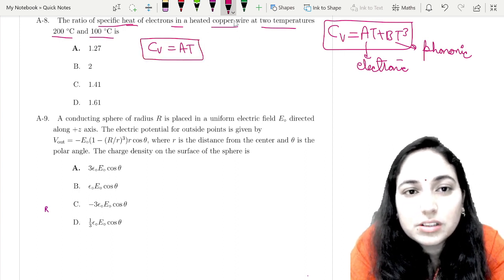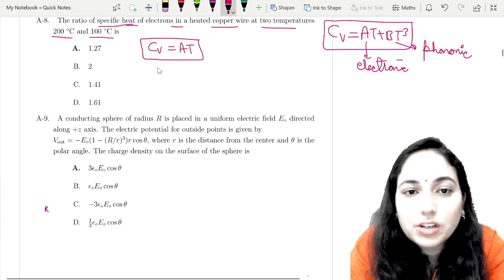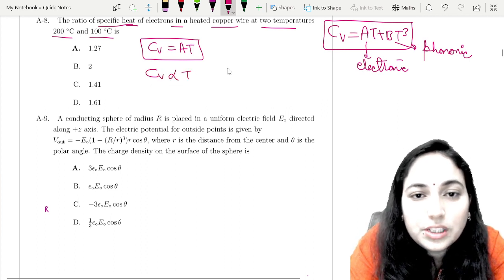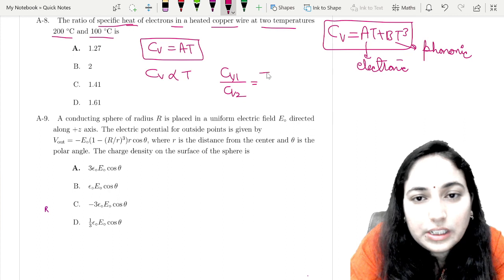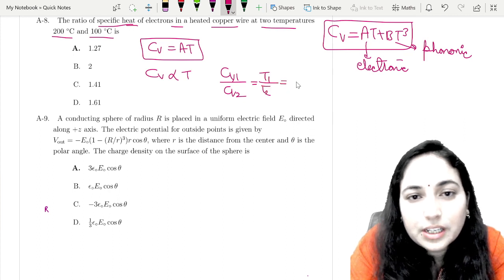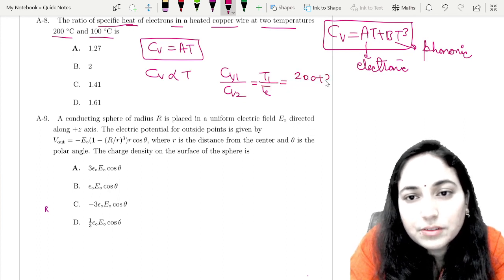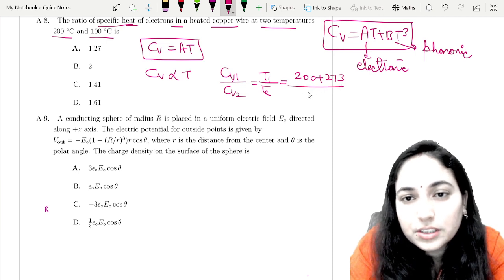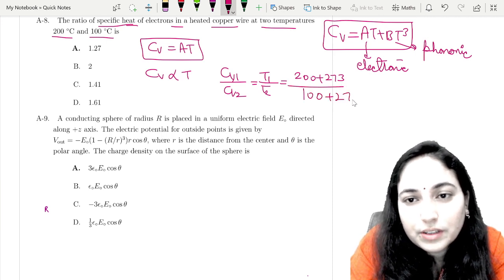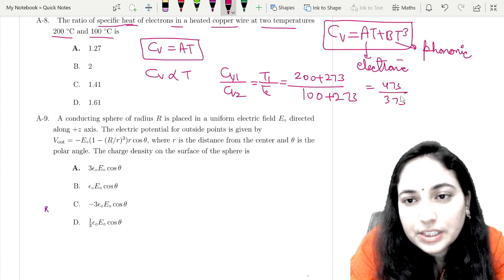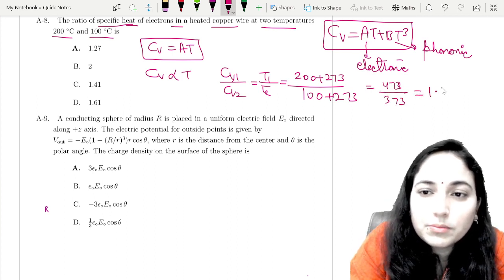cv1 upon cv2 equals T1 by T2. T1 is 200°C and T2 is 100°C. Convert to Kelvin: 473 upon 373, which equals 1.27. Be careful to convert to Kelvin, so the answer is option B.